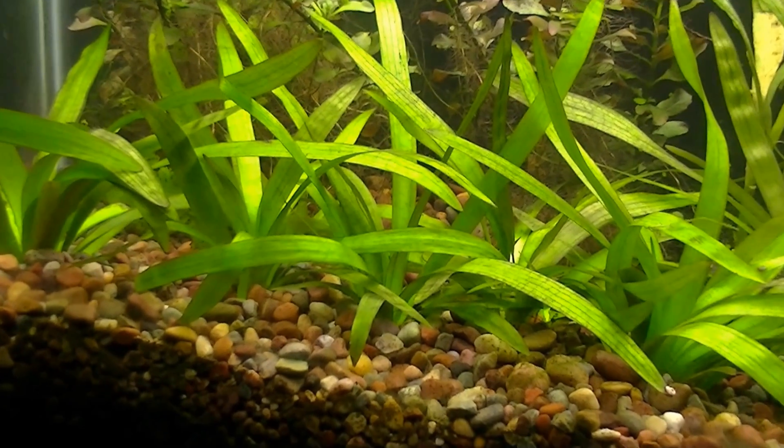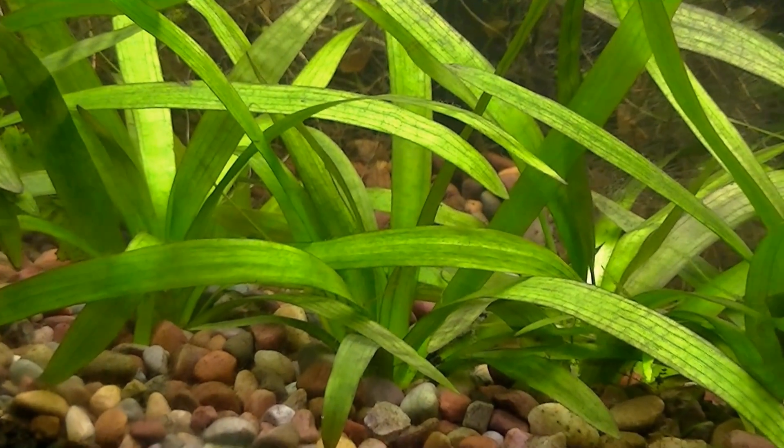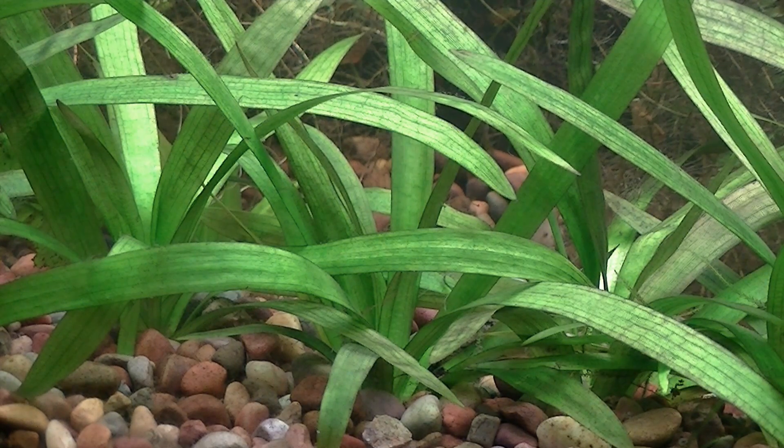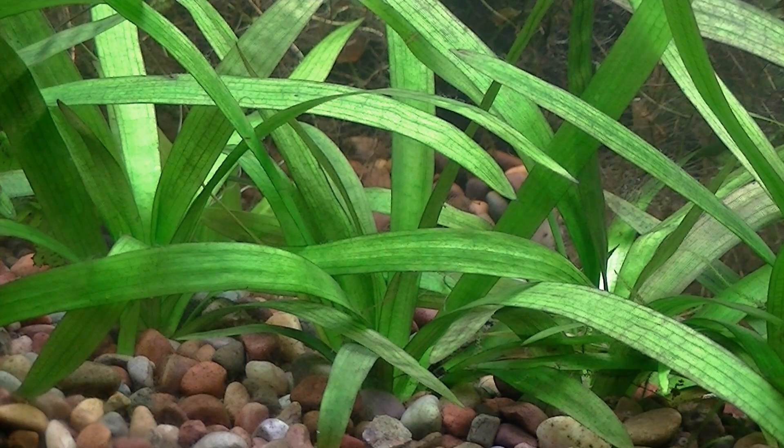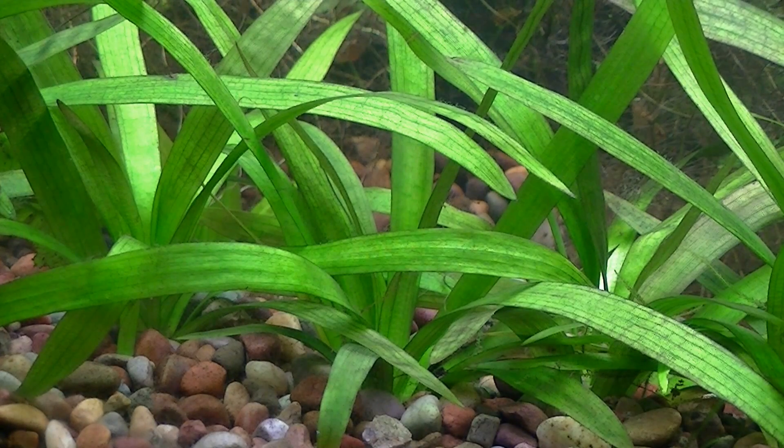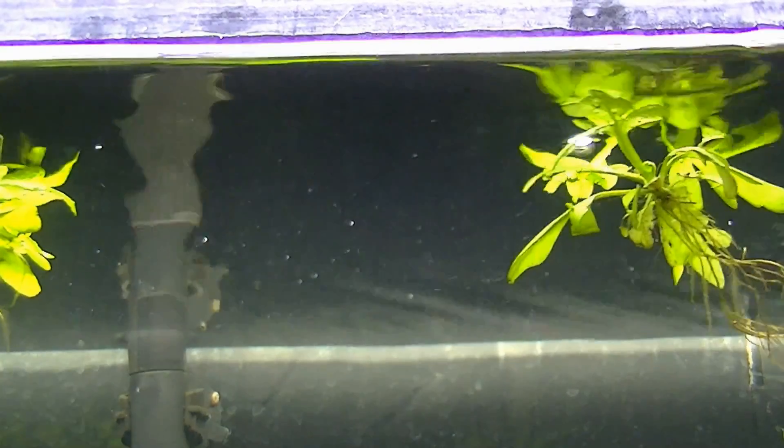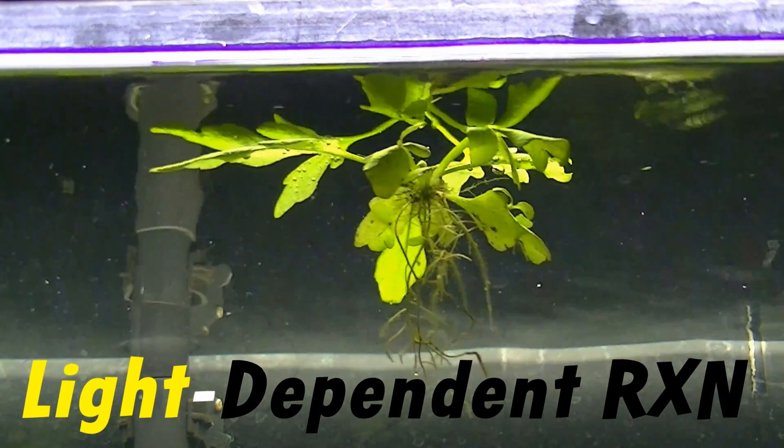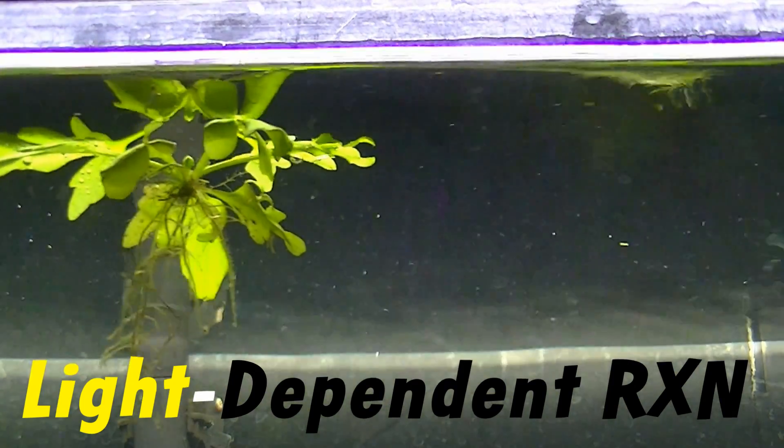In the aquarium, plants are responsible for performing several actions which are beneficial to the overall water quality and in turn our fish. In order to accomplish nutrient uptake, oxygen production, and carbon fixation, plants first have to harness and convert the energy coming from the light above. This process is called the light-dependent reaction which happens only during the photoperiod or the time in which your aquarium lights are on.